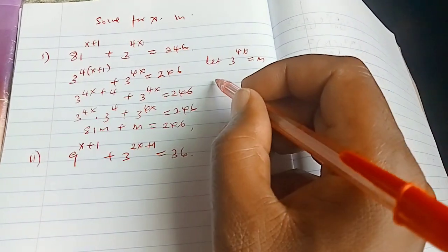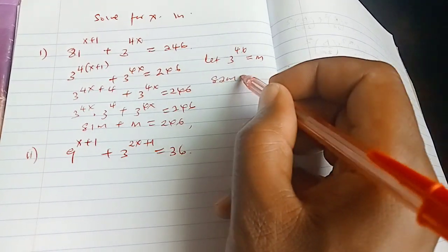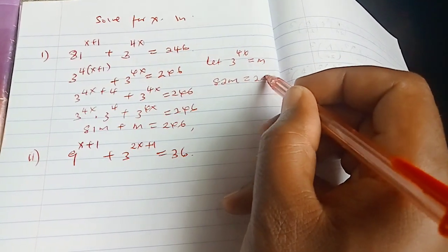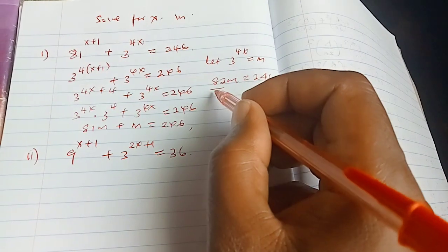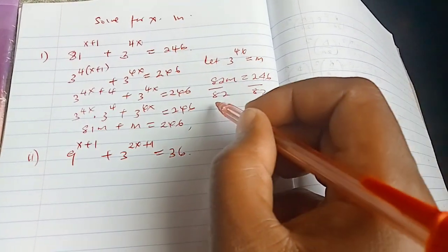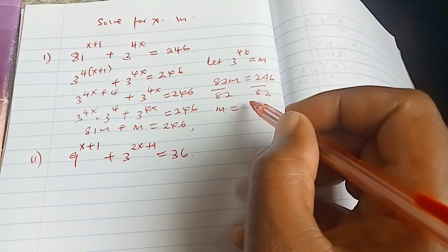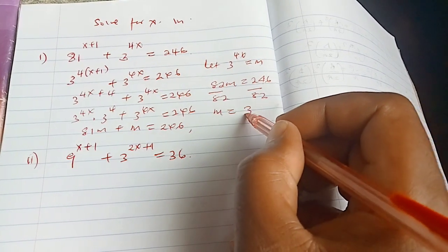So coming up here because of space we have 82m is 246. So if you divide by 82 both sides you are going to have m equals to 3.